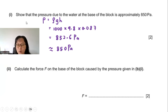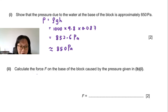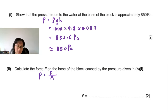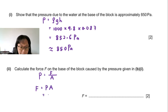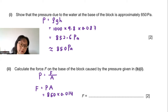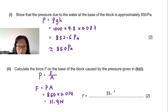Part 2: Calculate the force F on the base of the block caused by that pressure. Using the definition pressure = force per unit area, force = pressure × area = 850 × 0.014 = 11.9 N, which can be rounded to 12 N. 11.9 N is three significant figures.